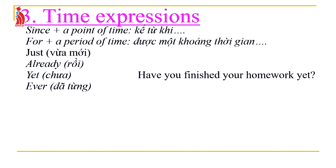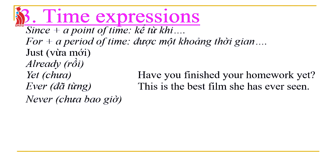'Ever' means 'đã từng' (ever done), used in affirmative and question sentences, placed between the auxiliary and the past participle. Example: 'This is the best film she has ever seen.' 'Never' means 'chưa bao giờ' (never done), placed between the auxiliary and the past participle. Note: 'never' is used with an affirmative verb form but the sentence carries a negative meaning, because 'never' itself is already negative.